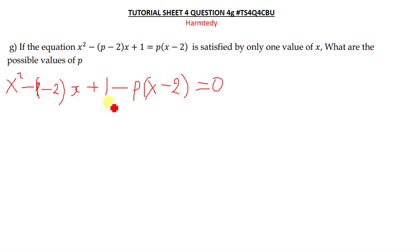So what we can do again here is we open the brackets. So when you open the brackets, we are going to have x squared minus, say negative p. If we want, we can say plus negative p and then minus, I mean plus 2 there.